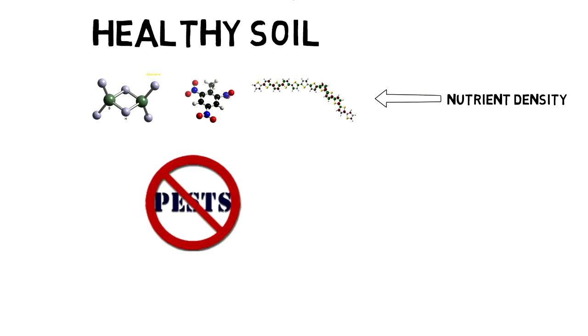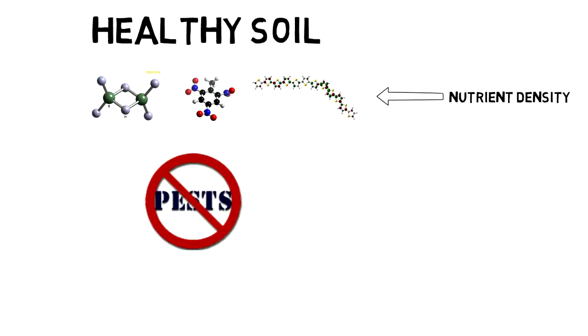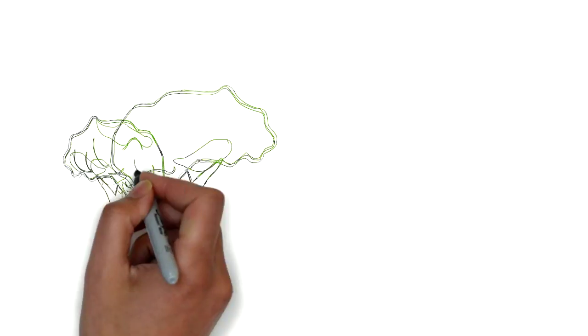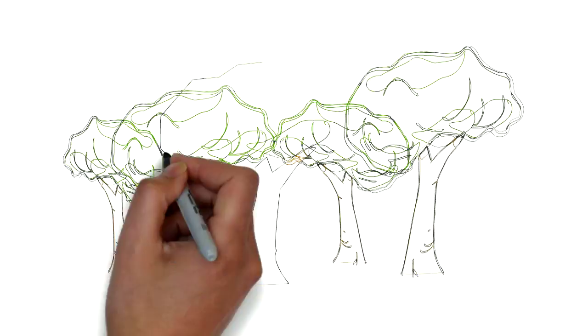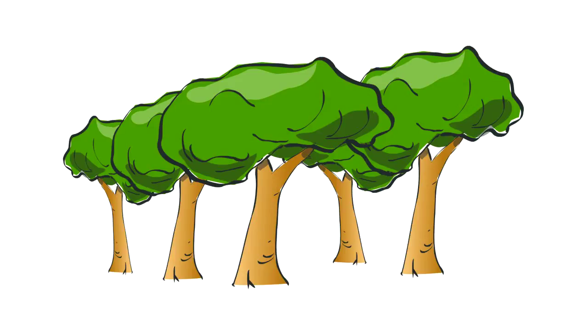No pest is a phenomenon that a lot of organic biological growers see when things are really doing well. You don't see any pests and disease on plants and trees in nature because it's nature's way of eliminating the weak from the system.